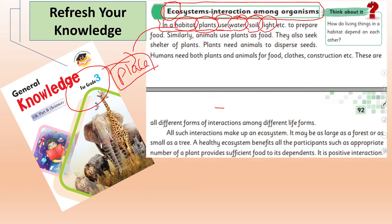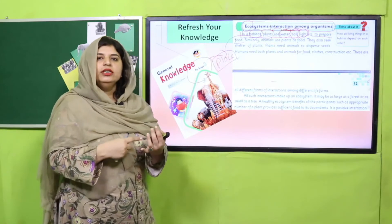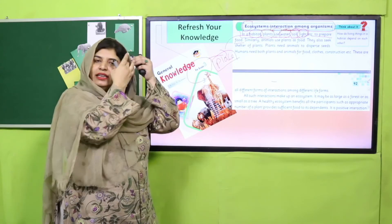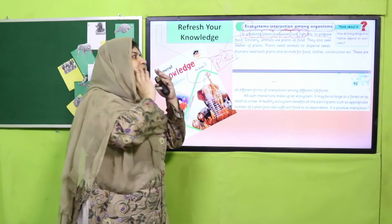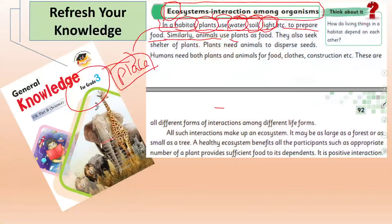If in the environment there is water, sunlight, and soil, plants are able to produce their food. Similarly, animals depend on plants for their food requirements and they also seek shelter — a place where any animal can live. Plants also need animals: some plants have spores they need to spread around to grow into new plants, so these spores need to be dispersed.